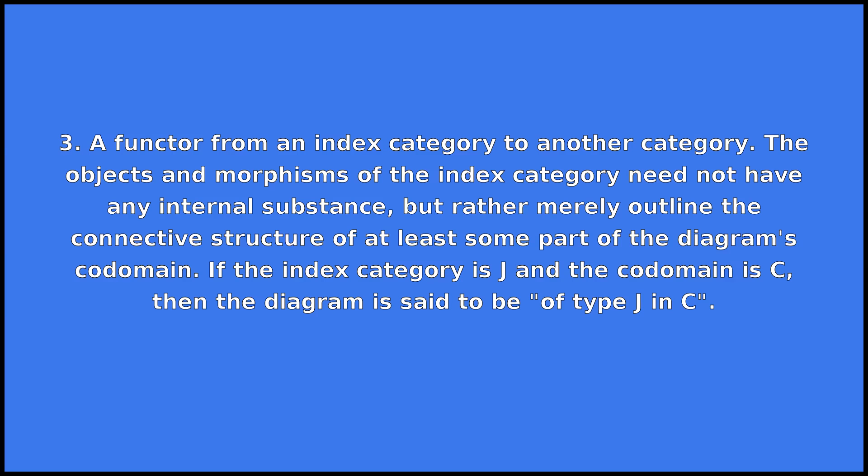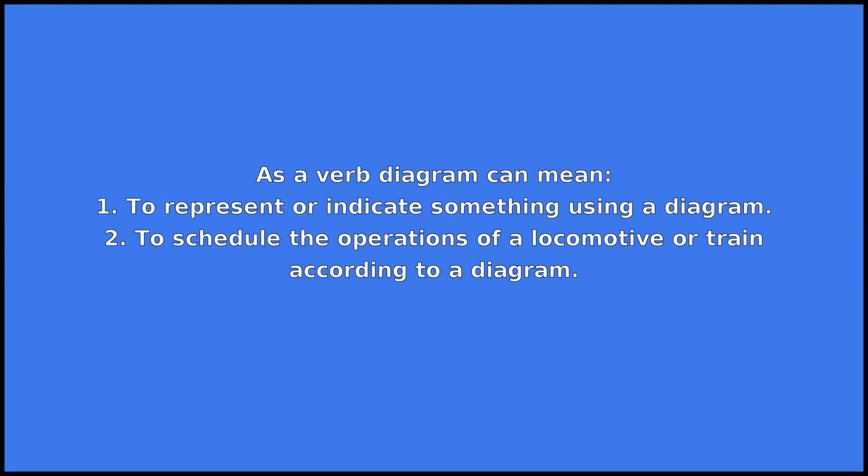to be of type J in C. As a verb, diagram can mean: one, to represent or indicate something using a diagram. Two, to schedule the operations of a locomotive or train according to a diagram.